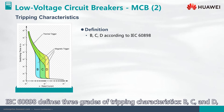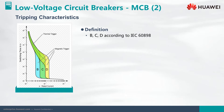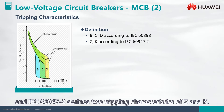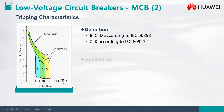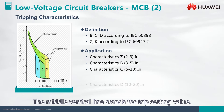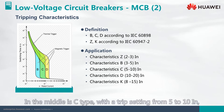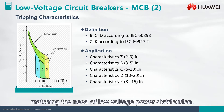IEC 60898 defines three grades of tripping characteristics: B, C, and D. IEC 60947-2 defines two tripping characteristics: Z and K. The middle vertical line on the curve stands for the trip setting value. C type is in the middle, with a trip setting from 5 to 10 times rated current, matching the needs of low voltage power distribution.